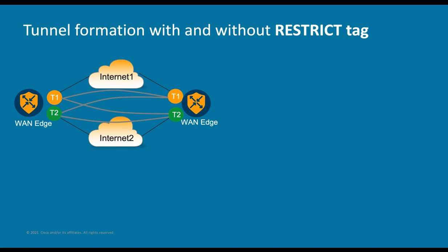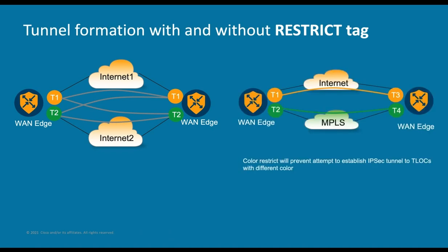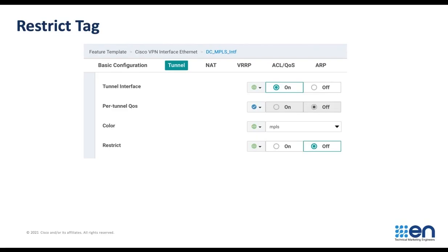Cisco SD-WAN solution is going to form a full mesh network tunnels among all different types of transports — that's the default behavior. If you want to avoid this behavior, you have the restrict tag option. It will prevent tunnel formation with different colors. That's a perfect solution for transports such as MPLS. You can enable the restrict tag in the Cisco VPN interface Ethernet feature template.